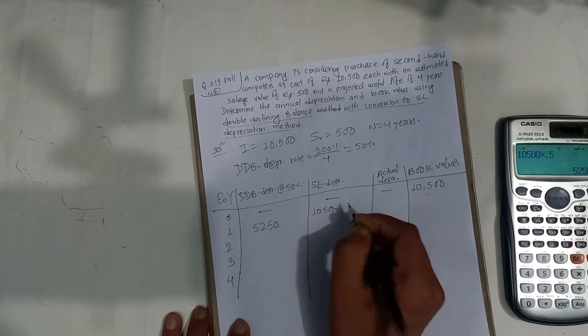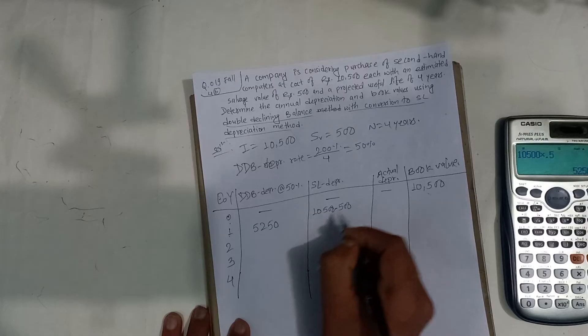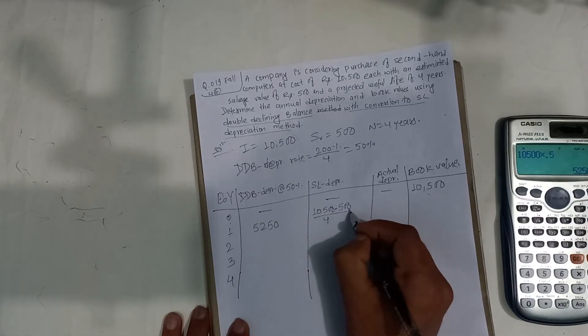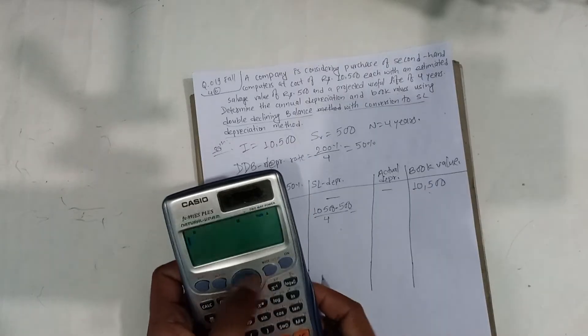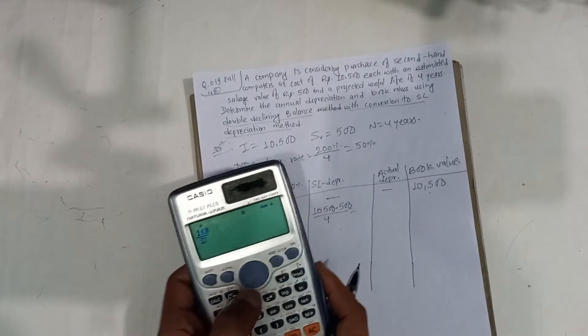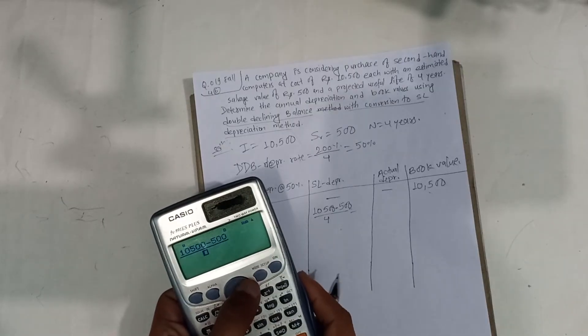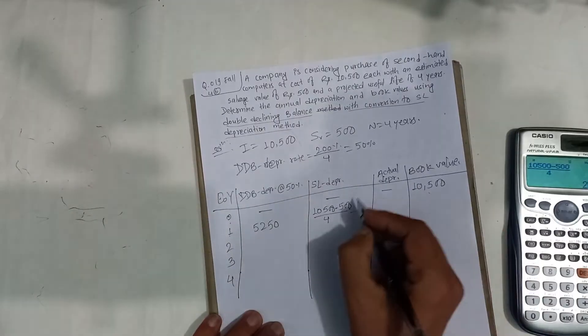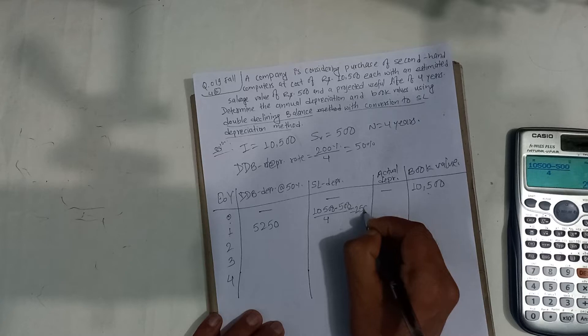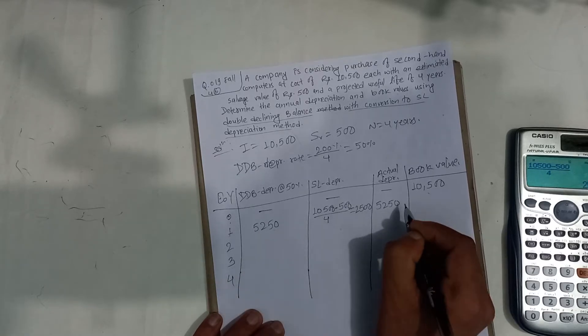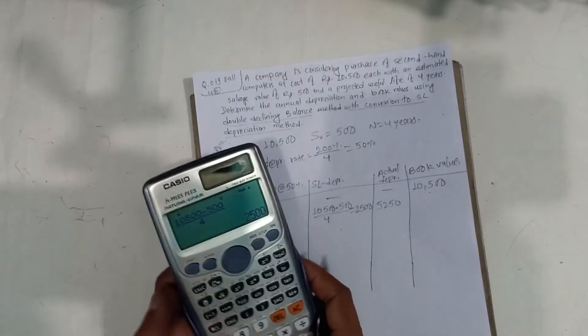SL depreciation is what? 10,500 minus salvage value 500, divided by 4 total years, which equals 2,500. Which one is greater? Obviously 5,250 is greater, so we use 5,250.